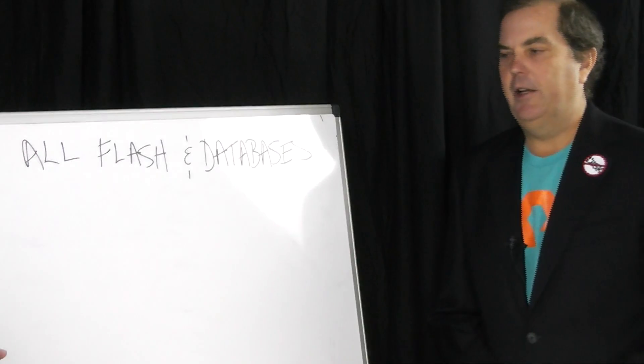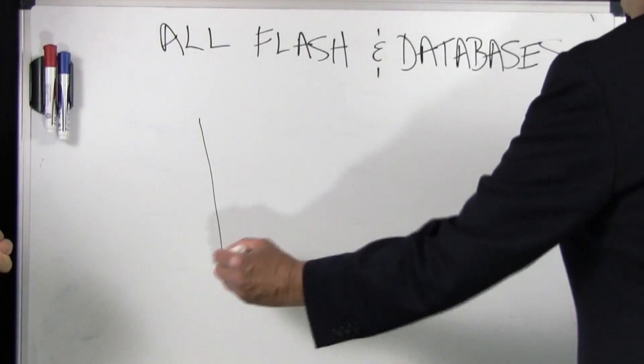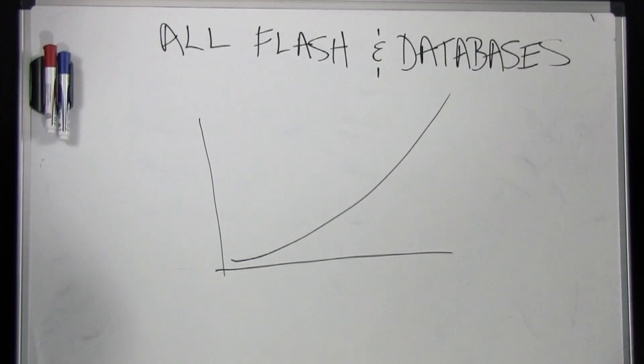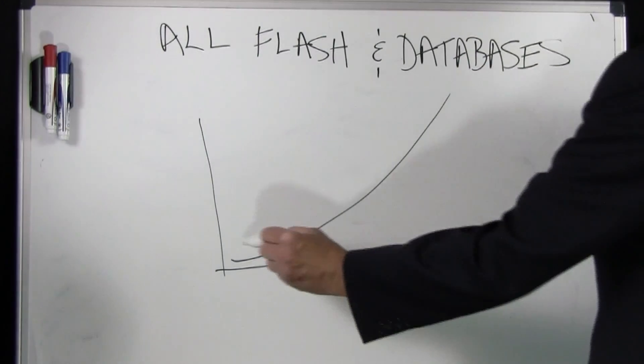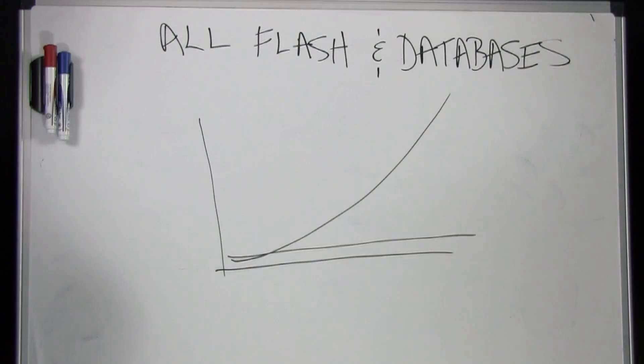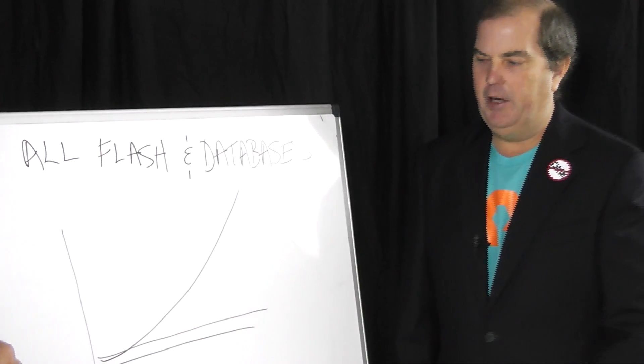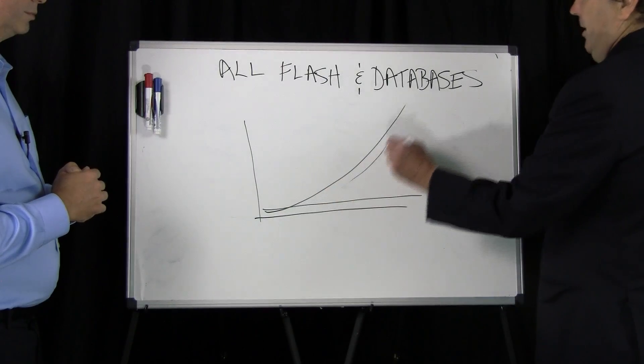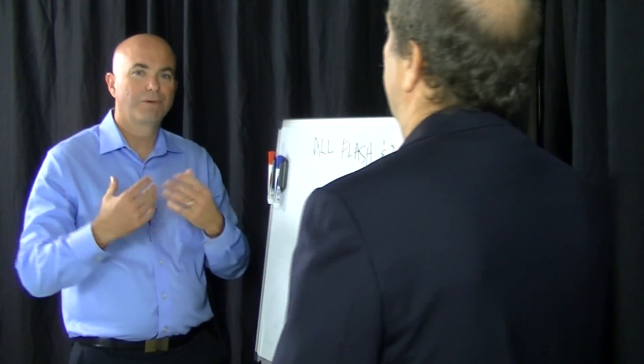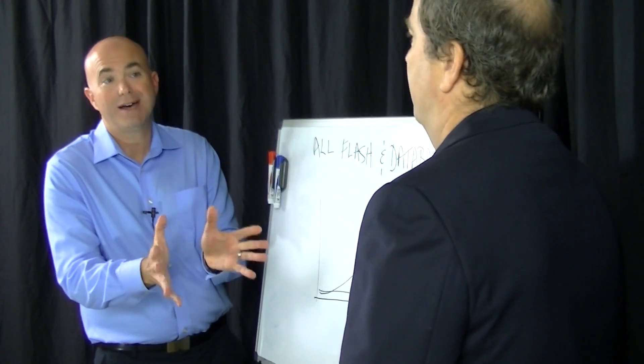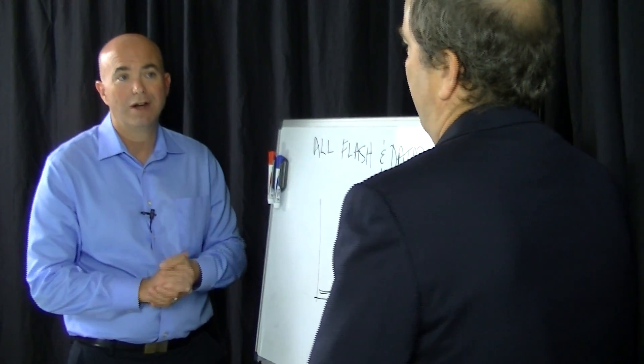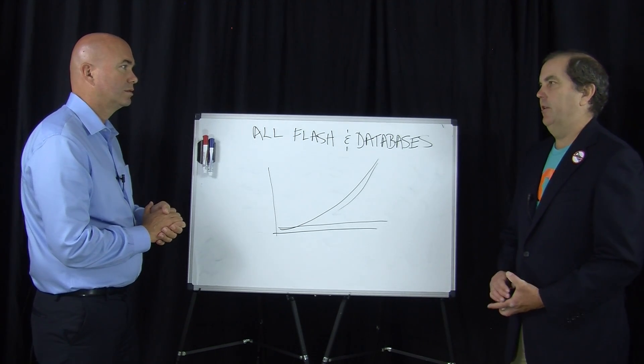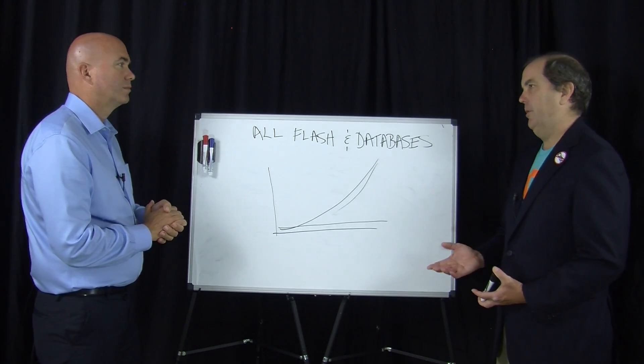Well, you're right that really nobody needs a million IOPS. But what's been going on over time, as everybody knows, is Moore's Law. CPUs and memory have been riding this curve. Disk has been riding a flat line. And what Flash brings to the picture is the ability for the database or whatever you're using storage for to get on this bus and go that way. So basically performance becomes less of an issue or even a non-issue in those environments.